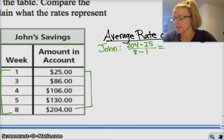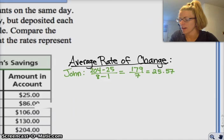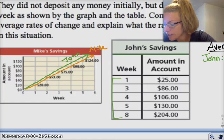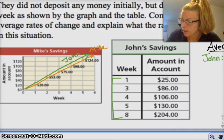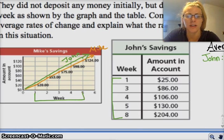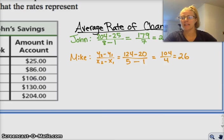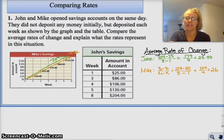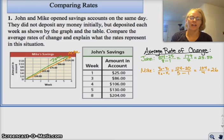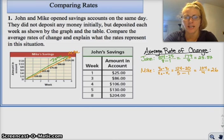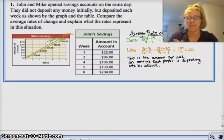Then we can do the same thing for the other account. So for Mike, his max amount is 124. And he went from $20 to $124 in a span of, let's see, from one week to five weeks. So then we can do the same thing for Mike. So in this case, Mike's average rate of change is 26. And then it asks, explain what the rates represent in the situation. And this is how much per week, on average each person is deposited into their account. So John, on average, is depositing $25.57 into his account. And Mike is depositing, on average, $26 in his account.